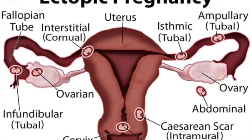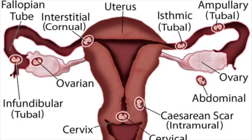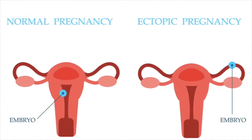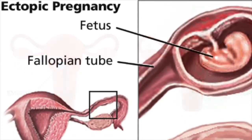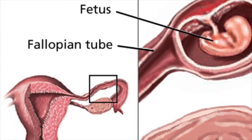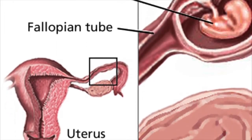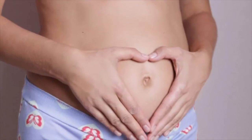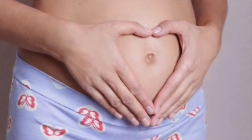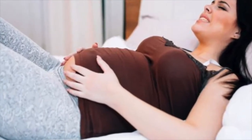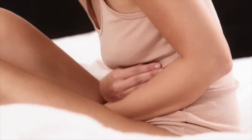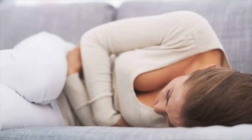What are the symptoms of an ectopic pregnancy? Although you may experience typical signs and symptoms of pregnancy, the following symptoms may help recognize a potential ectopic pregnancy: sharp or stabbing pain that may come and go and vary in intensity. The pain may be in the pelvis, abdomen, or even the shoulder and neck due to blood from a ruptured ectopic pregnancy gathering under the diaphragm.